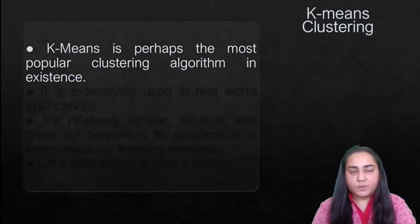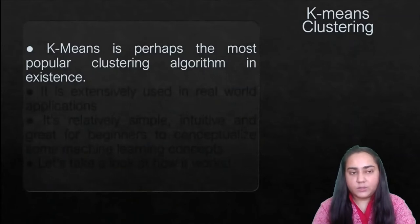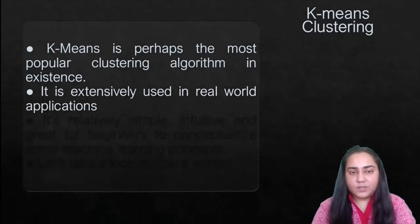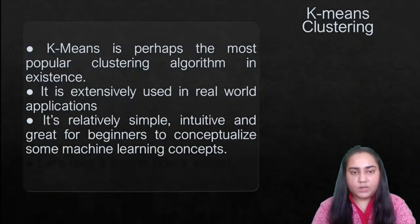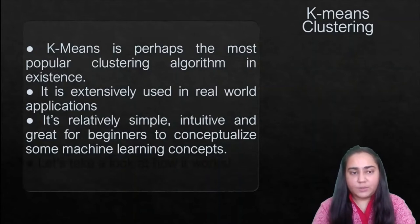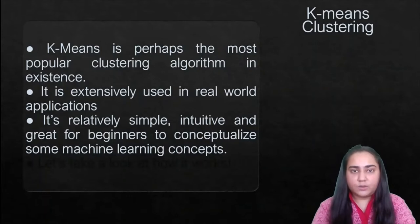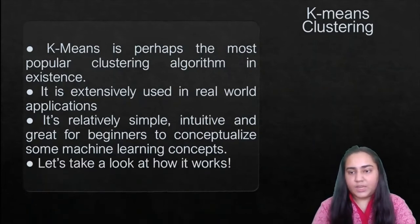K-means clustering is perhaps the most popular clustering algorithm in existence and it is extensively used in all real-world applications for clustering. It is relatively simple, intuitive, and great for beginners to conceptualize some machine learning concepts. It is an unsupervised machine learning algorithm, and we're going to now see how k-means clustering actually works.